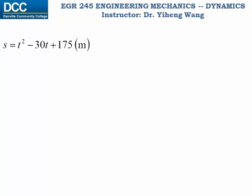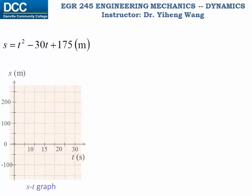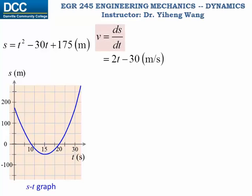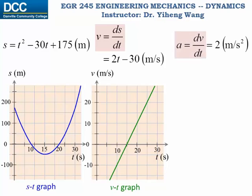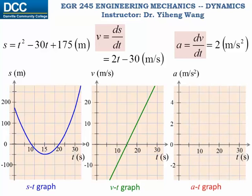Let's quickly look at another example. Here we have another position function given as a function of time for a continuous rectilinear motion. Based on this function we can sketch the s-t graph. Differentiating gives velocity as a function of time, and we can sketch the v-t graph. Differentiating again, we find that the acceleration is a constant two, and we can graph this constant function to get the a-t graph.